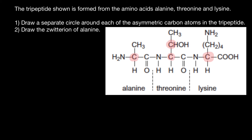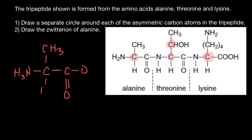Now we can move to the second question: draw the zwitterion form of alanine. So here is alanine. Let's start with the alpha carbon, also called the asymmetric carbon. Here is the methyl group on top — CH3 — and the carboxylic group on the side, and an amino group here: H3N. As you can see, we have one extra hydrogen here, so this group has a positive charge. And here we are missing a hydrogen, so this group is negatively charged.